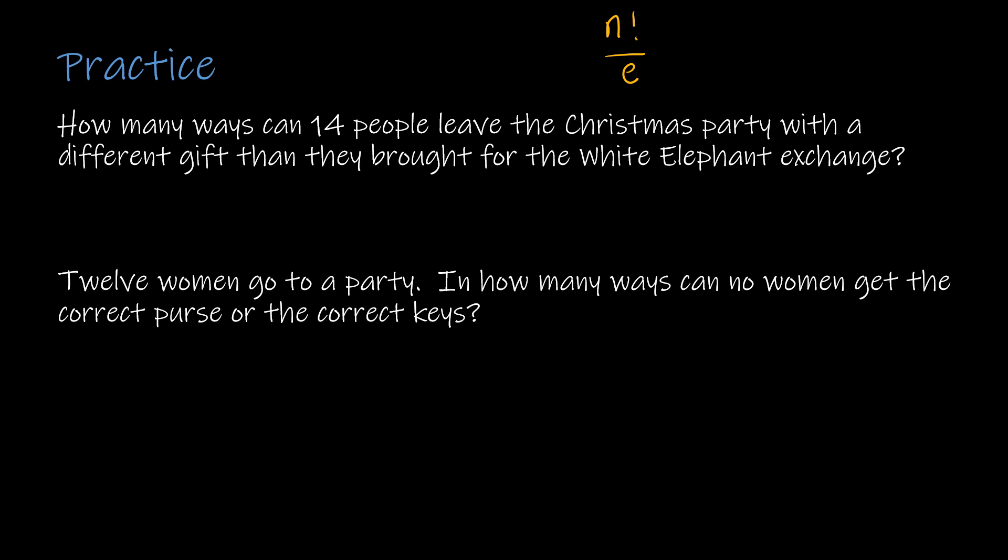For the first one, very straightforward. There's 14 people, and we're all leaving with a different gift than they brought for the White Elephant Exchange. If you don't know what a White Elephant Exchange is, feel free to look that up, or just think about that as how many ways can they leave without their correct coat. So 14 factorial over e. Not even breaking a sweat. I don't even need to get my calculator out. I'm going to leave it just like that.